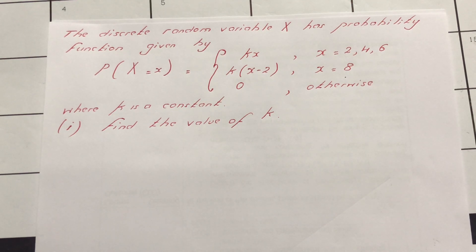The second part of the probability function is k(x-2), which is valid for value of x equals 8, and then 0 otherwise, where k is a constant. You are asked to find the value of k.